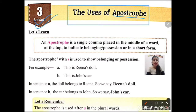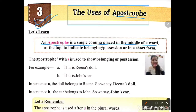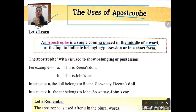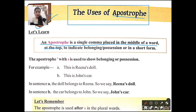Before starting the use of apostrophe, let us talk about what an apostrophe is. An apostrophe is a single comma placed in the middle of a word, at the top. We place it in the middle of words, at the top — that means above the letters.